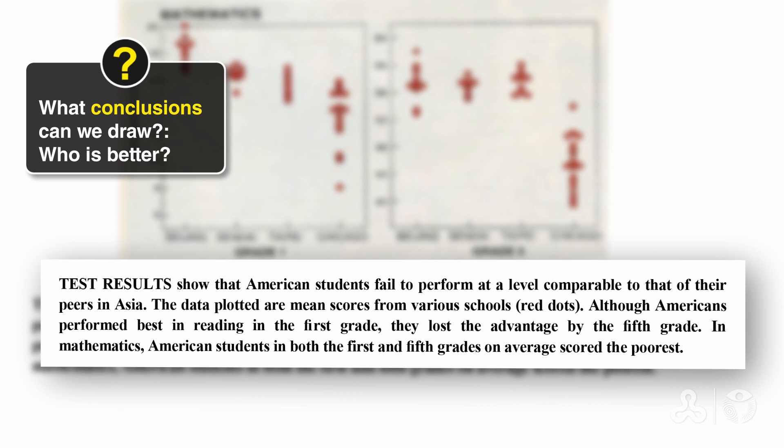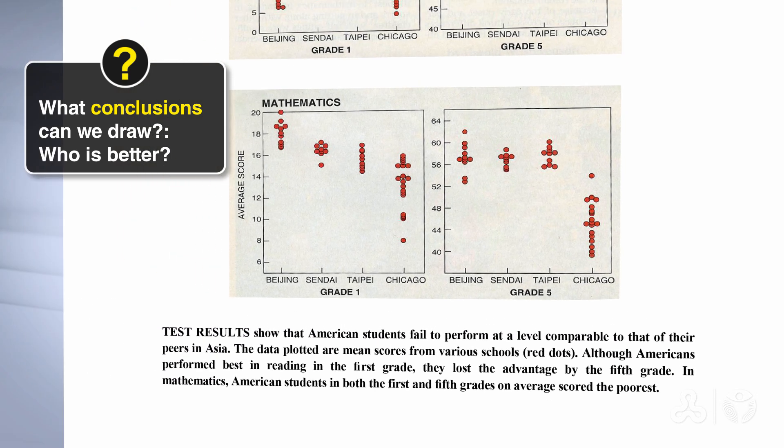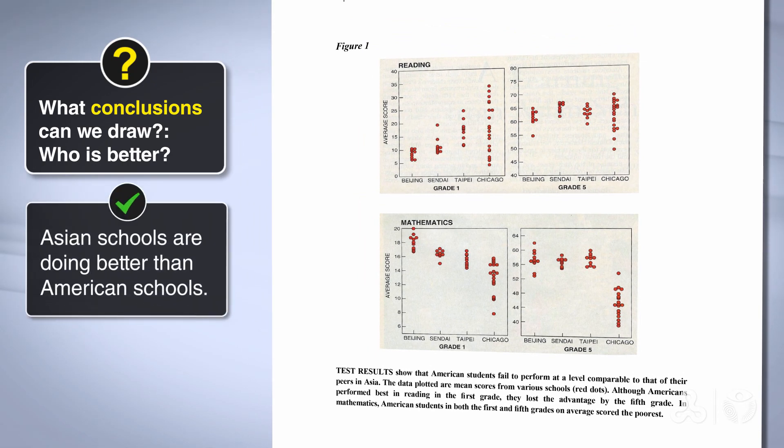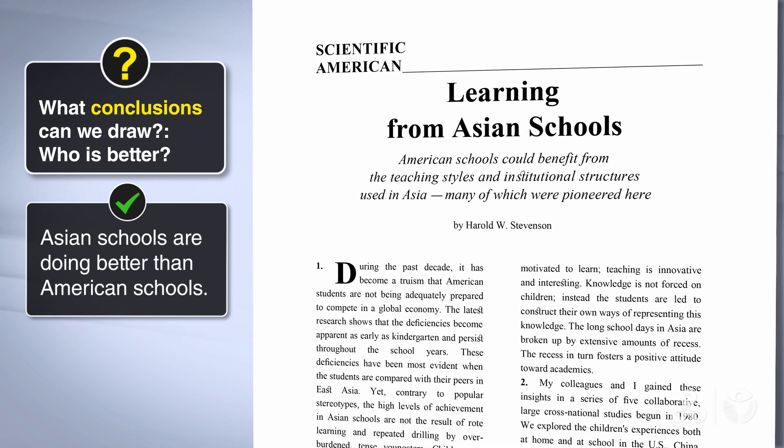The first sentence of the caption is a clear statement of what we just said. Let's zoom in on it. Test results show that American students fail to perform at a level comparable to that of their peers in Asia. So, what are our conclusions? In general, we can say that the Asian schools are doing better than the American schools, which is exactly what the title says.